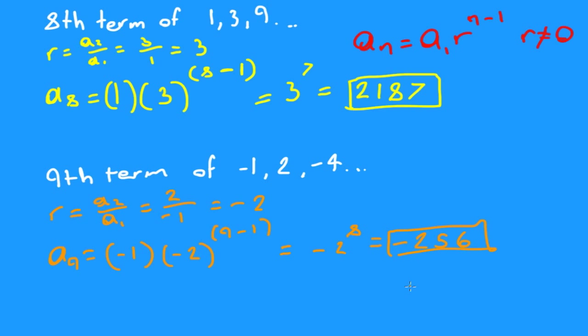And there you go. That's your answer. And that's how you get an indicated term for a geometric sequence. Remember that geometric sequences are the ones with the ratio.